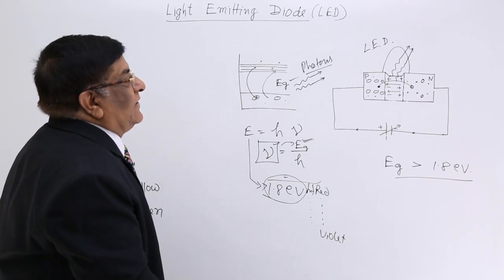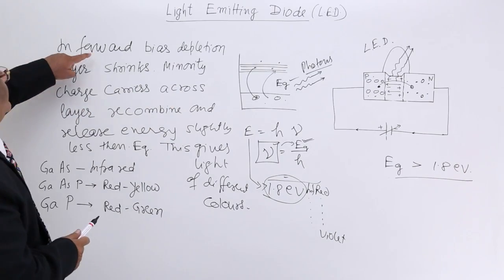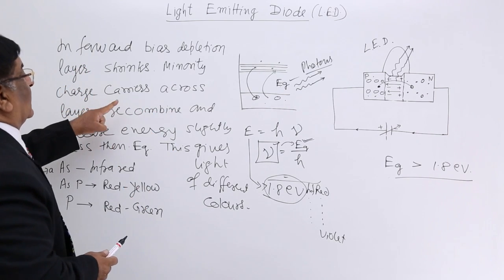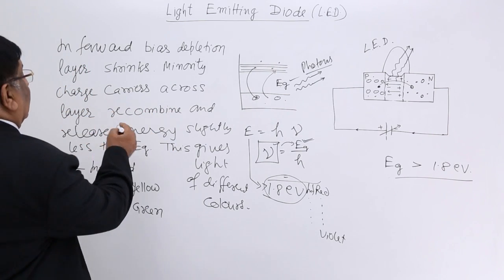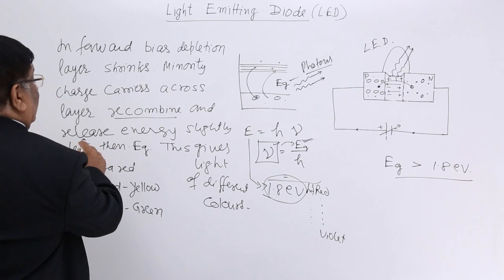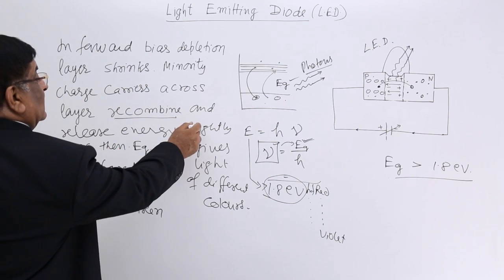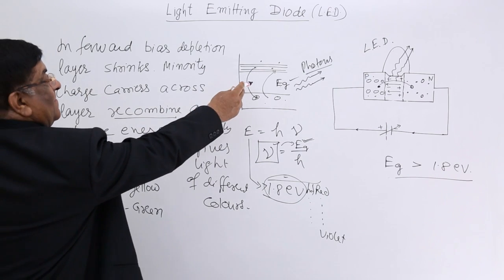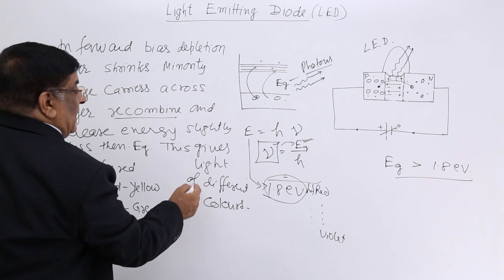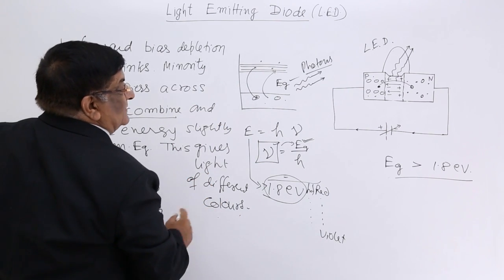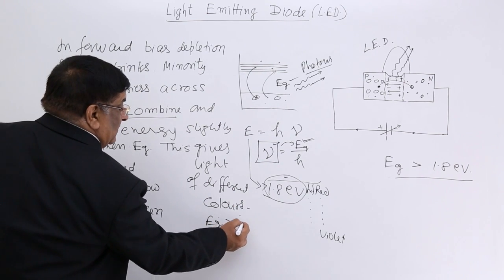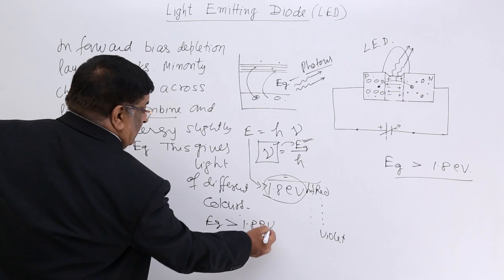So in working, what will you write? It is like this, that in forward bias depletion layer shrinks. Minority charge carriers across the layer recombine and release energy slightly less than energy gap. This gives light of different colors. And the energy gap has to be more than 1.8 electron volt.